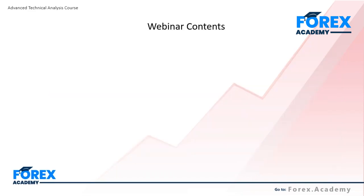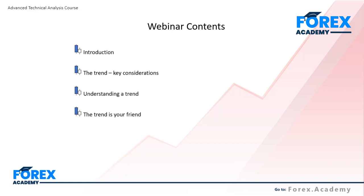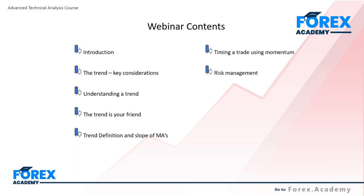In today's webinar, we'll be focusing a lot of our attention on how to trade the trend. We will recap some key considerations relating to the trend, revisit the concept of 'the trend is your friend,' and look at defining the trend through the slope of moving averages. We will then bring into the discussion momentum — also a topic discussed yesterday — illustrating how we can use the momentum oscillator to more precisely time a trading decision once a directional bias, i.e. your preferred direction in the market, has been established.